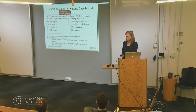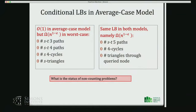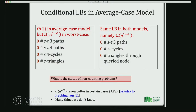What is the status of non-counting problems in this model? The only other paper I'm aware of is by Friedrich and Hebbinghaus, which shows that the all-pairs shortest path data structure — which takes N² time by Demetrescu–Italiano — would only take N^{4/3} in this average-case model, and under certain conditions even better. Other than this, there are no fast algorithms known in this model.